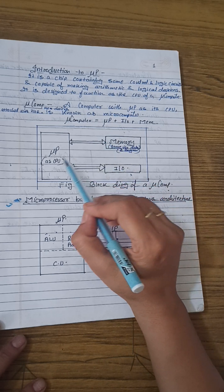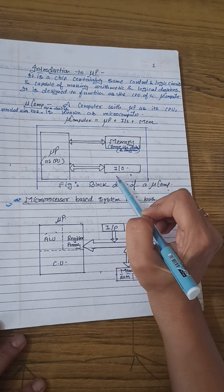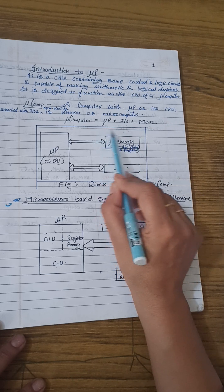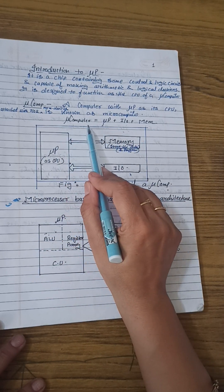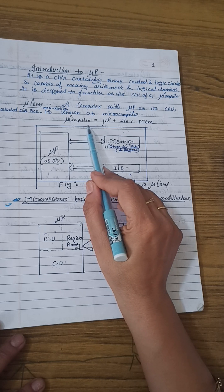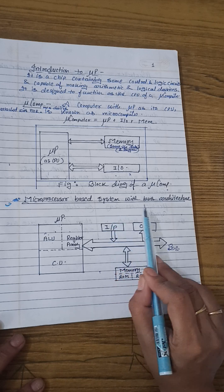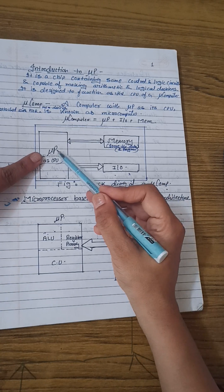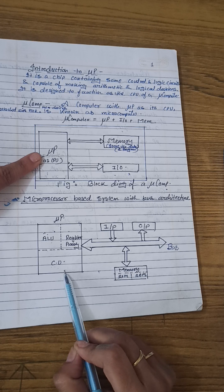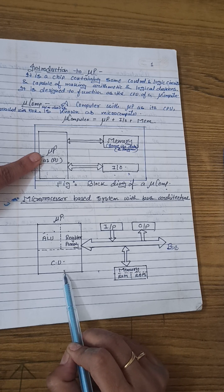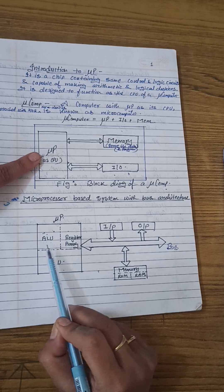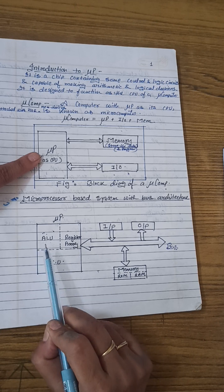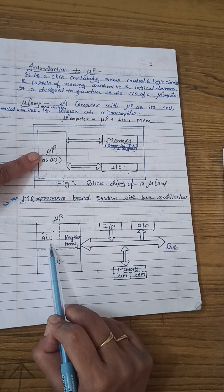अब जब भी आप यह तीन चीजें आपस में मिलाएंगी, तो जो एक नया interface produce हुआ — means the µP plus the I/O plus the memory — इस पूरे device को नाम दिया गया है एक computer या microcomputer का. Microprocessor based system with the bus architecture: inside the µP, what we are actually having — we are having the Arithmetic Logic Unit, that is ALU, which is doing the calculations, यानि arithmetic part plus the logical part, it means the AND, OR, NOR, etc.